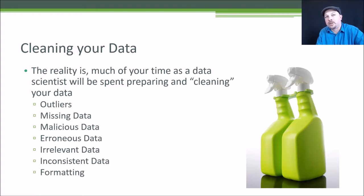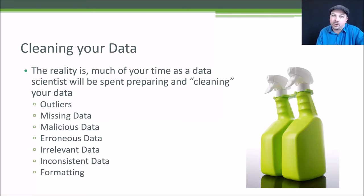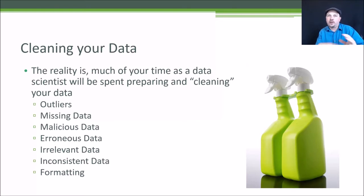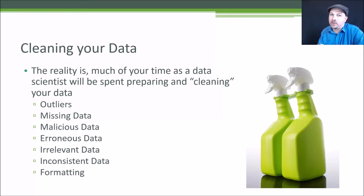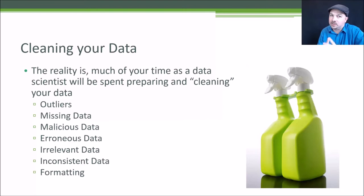There's also malicious data — people trying to game or cheat your system. For example, in a recommender system, there could be people fabricating behavior data just to promote their own items. You need to watch out for these shilling attacks and other attacks on your input data, filter them out, and don't let them win.